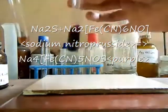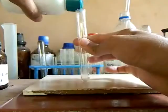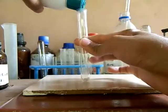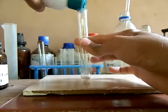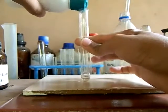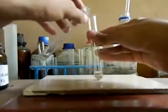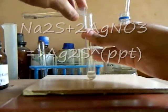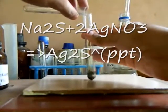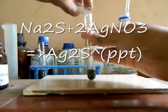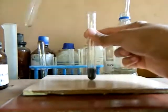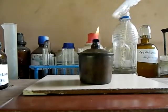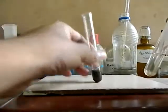Now we do the last test. Take some sulphide solution in a test tube and add some silver nitrate solution into it. A black precipitate is formed. Now add boiling dilute nitric acid to it. It slowly begins to disappear.